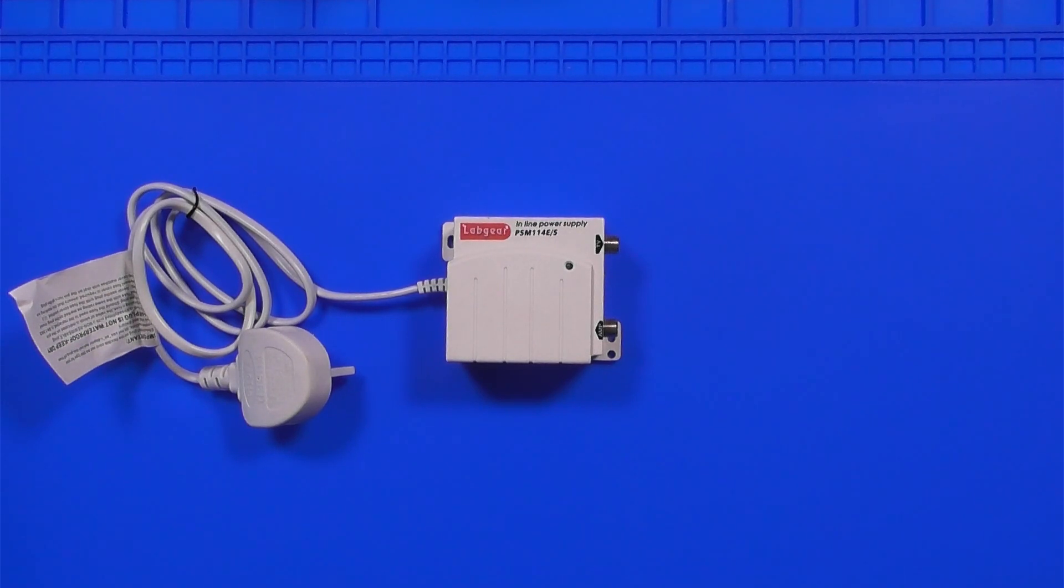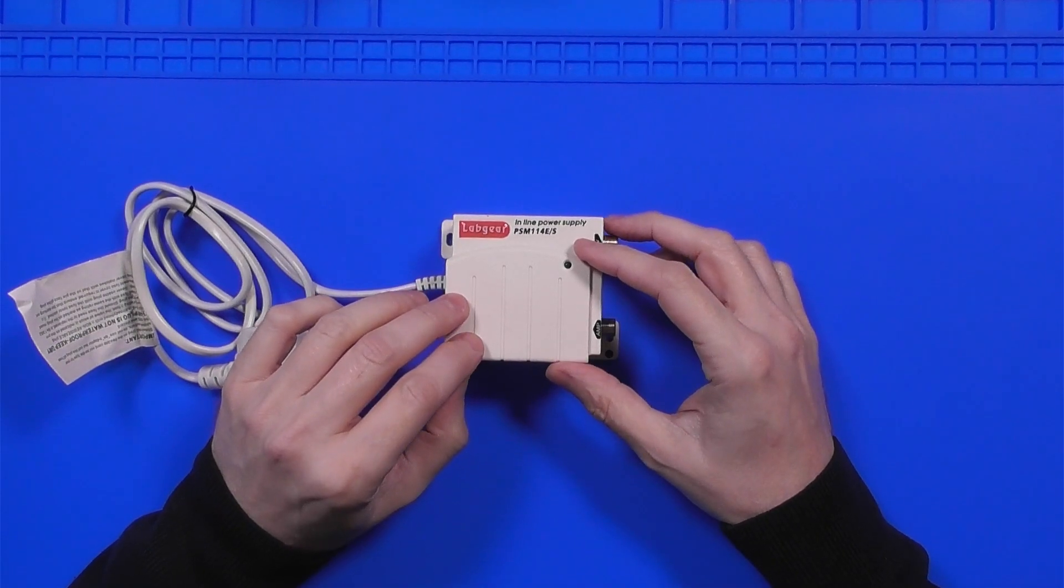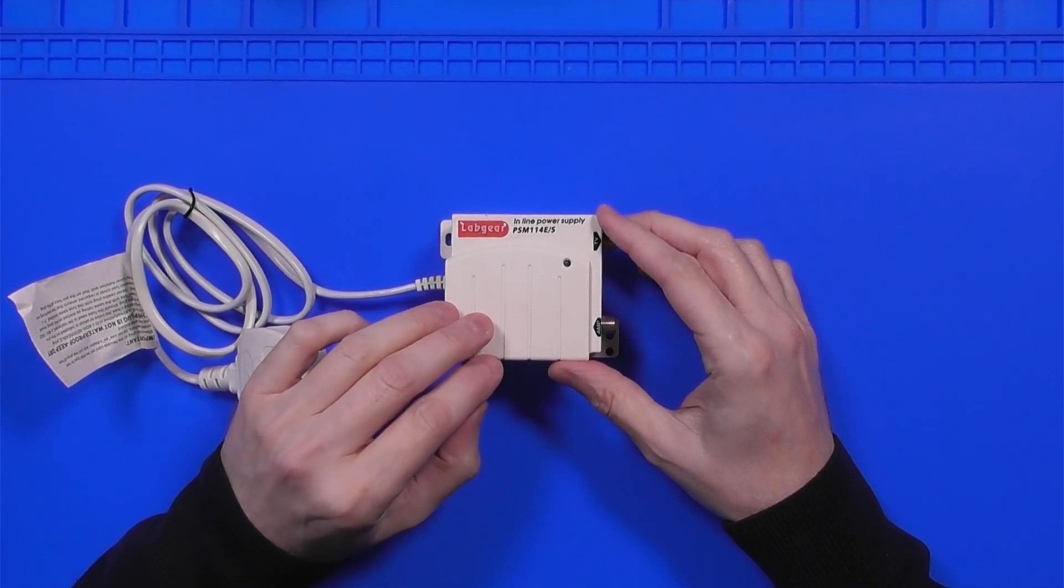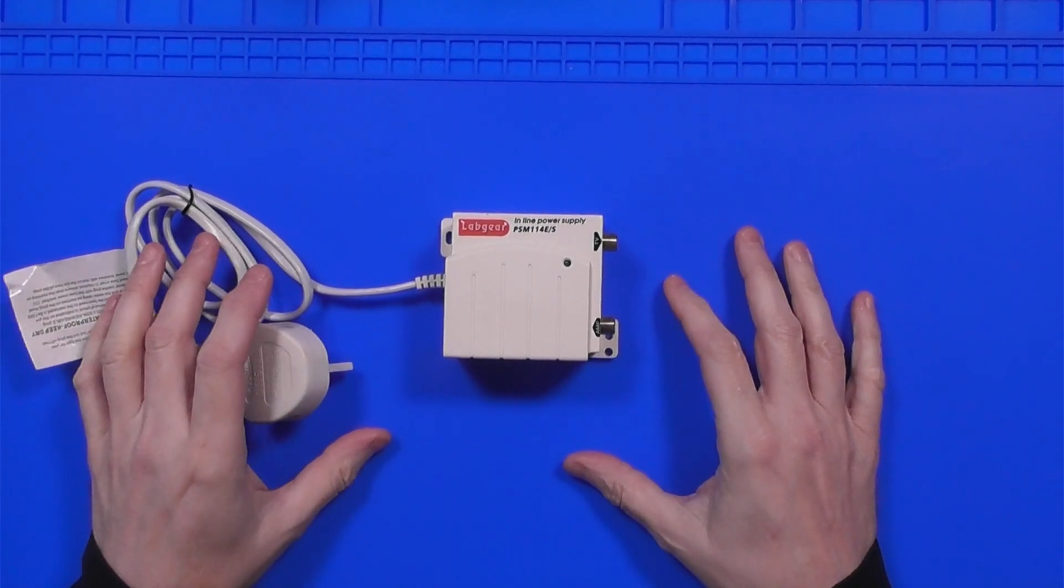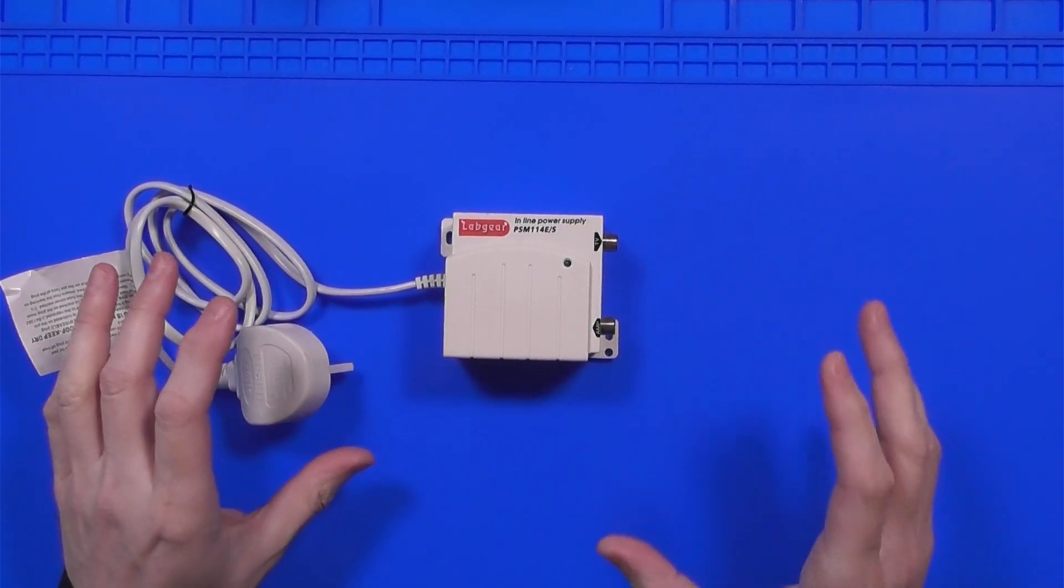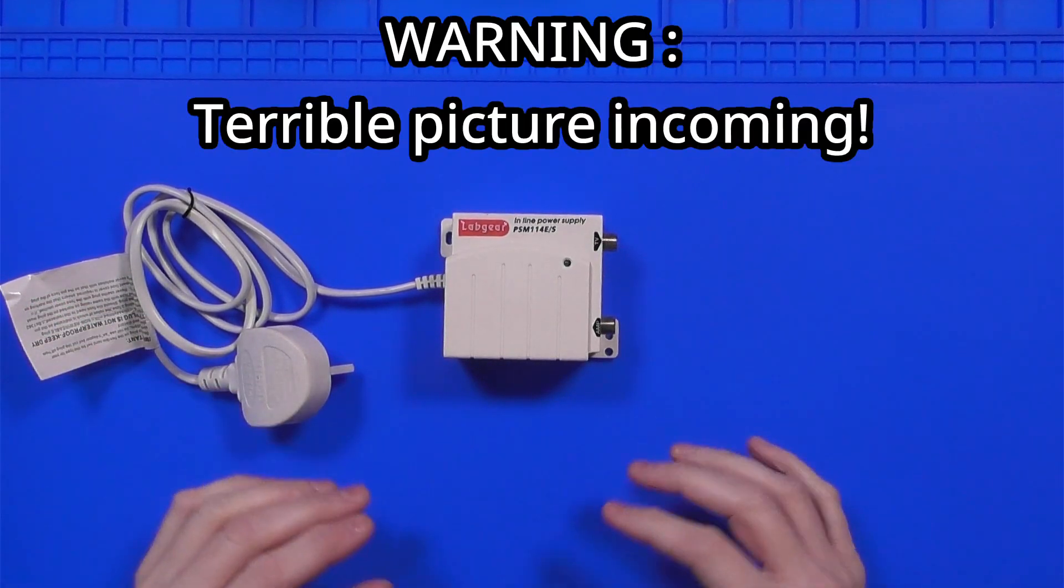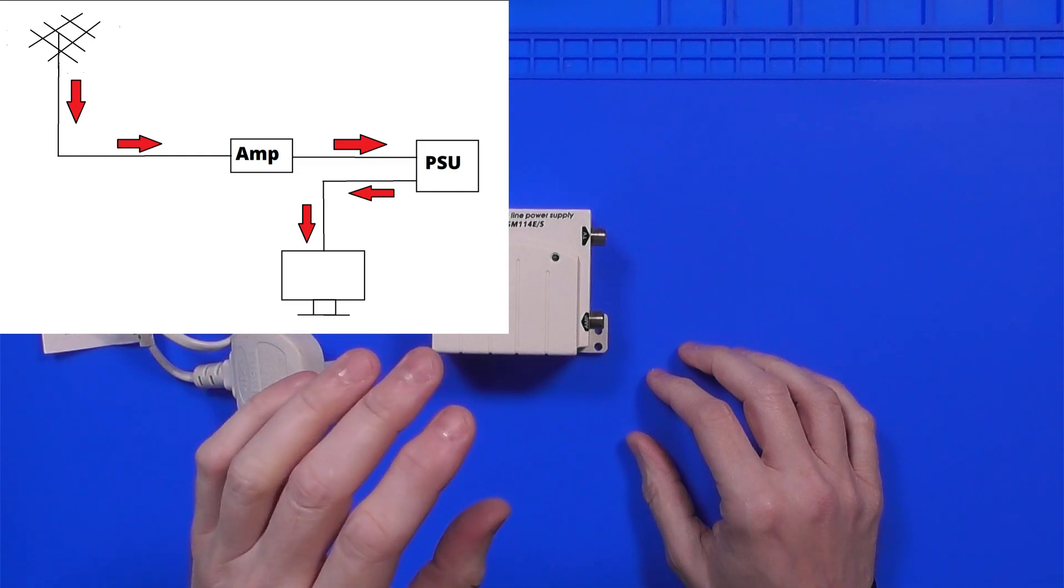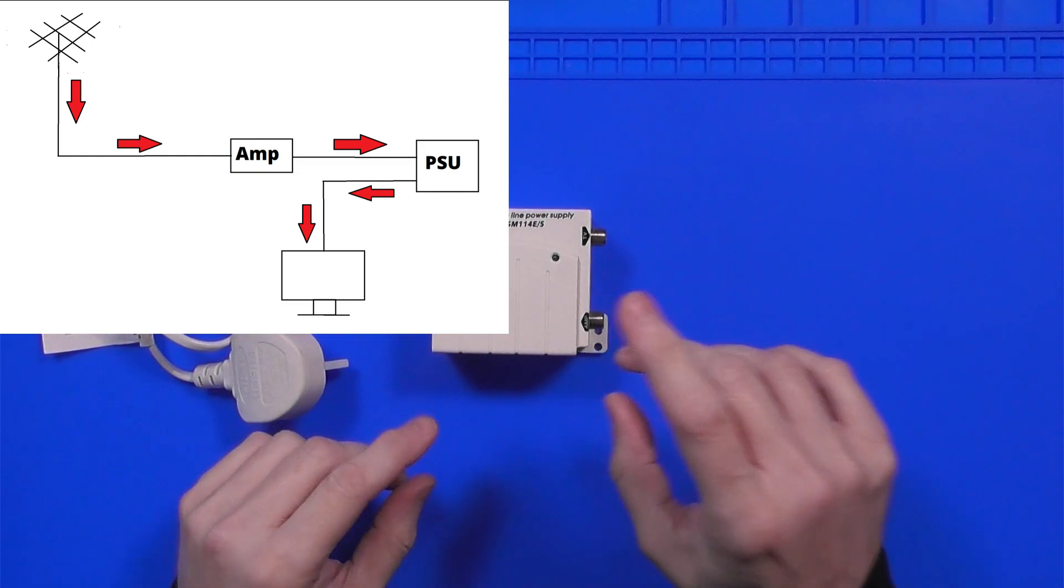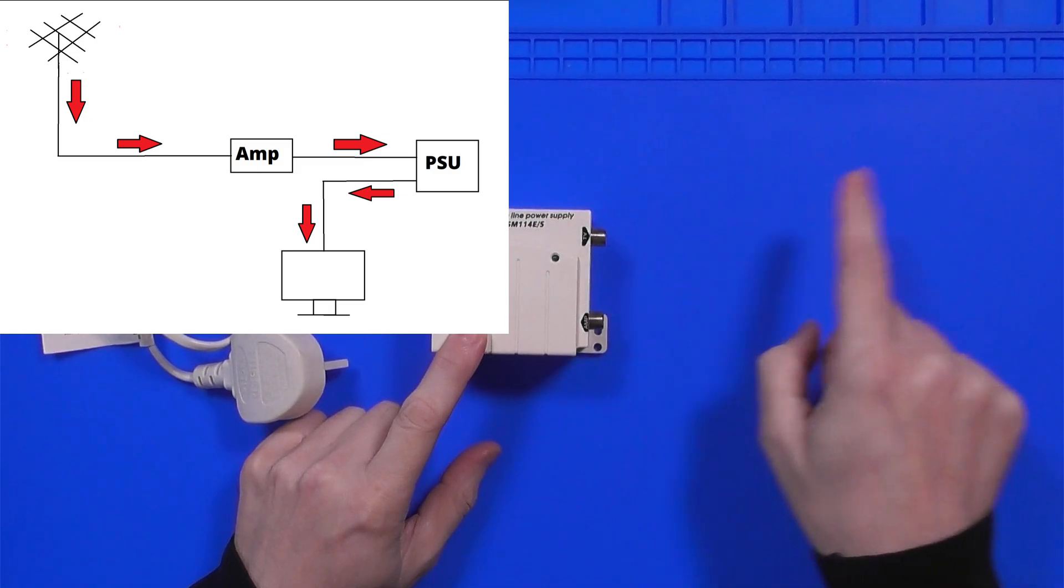Today we're going to look at this Labgear power supply. This is a power supply that's used to power a masthead amplifier. A masthead amplifier basically sits between the TV aerial and this and it increases the gain of the signal. The aerial plugs into the amplifier, the amplifier comes down to here, and then this signal goes to the TV.